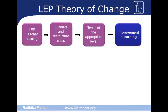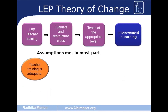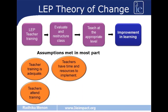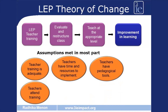On the Learning Enhancement Program, the theory of change is also fairly straightforward: teachers are trained, they evaluate and restructure the class based on learning ability rather than grade, and then teach at the appropriate level, leading to improvement in learning. Here the assumptions were met in most part. Teacher training was adequate — Pratham realized midway through implementation that they needed to intensify the training. Teachers did attend training, with attendance far higher than the CCE system. They had the time and resources to implement because they were allocated a special hour, and they were equipped with pedagogical tools — learning materials and prescribed activities to teach at every level.